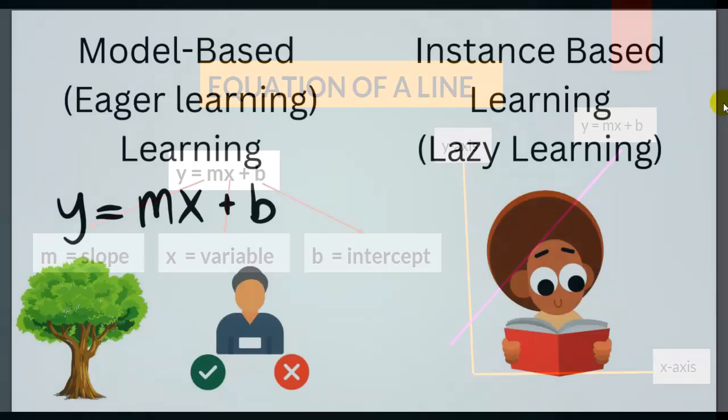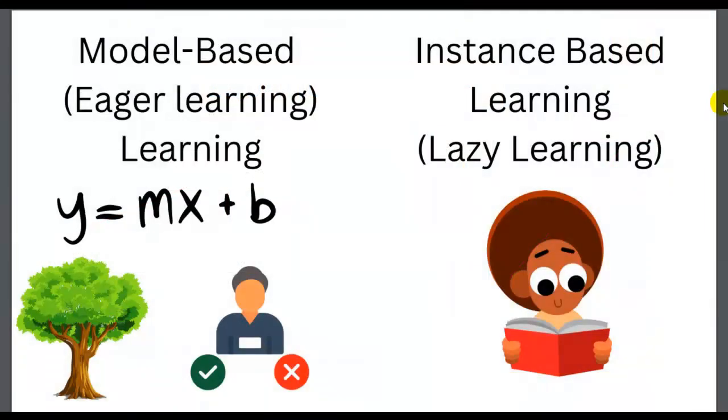So the model-based learning tries to construct a model during the training phase. When the test data comes in, model-based learning is ready with the model. It does not need to refer back to the training data. It can directly perform prediction using this created model.